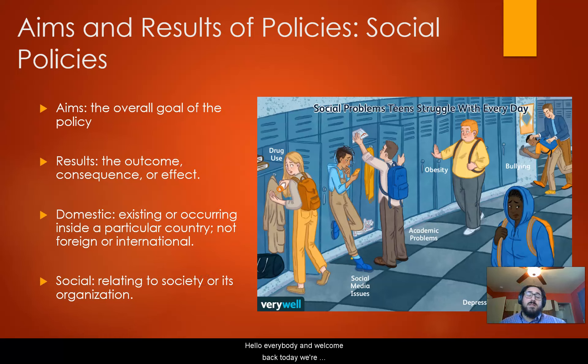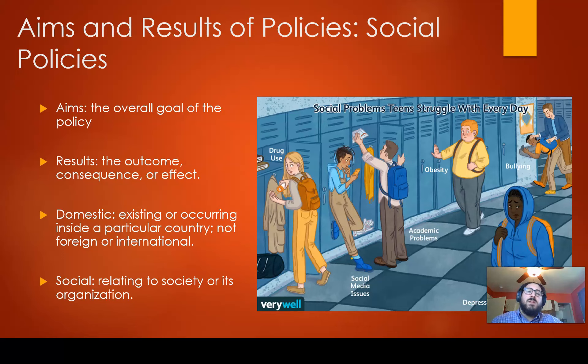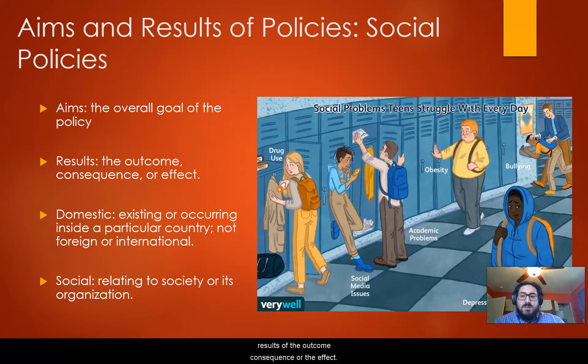Hello everybody and welcome back. Today we are talking about the aims and results of social policies. As a refresher, aims is the overall goal of the policy. Results is the outcome, consequence, or the effect.